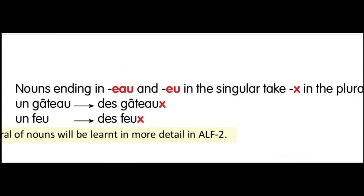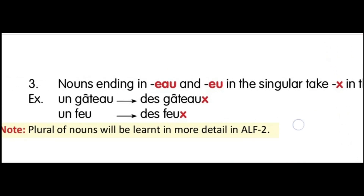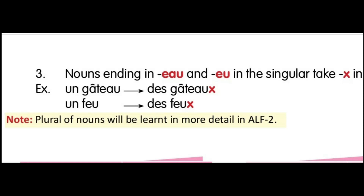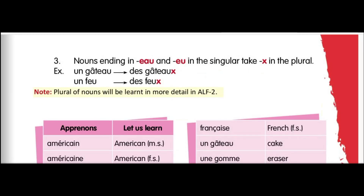The third rule: nouns ending in 'eau' or 'eu' in singular take an 'x' in the plural. For example: 'un gâteau' transforms into 'des gâteaux', and 'un feu' transforms into 'des feux'. There is a short note that the plural of nouns will be learned in more detail in 'Apprenons le français part 2', so more detail will be available in the next part.